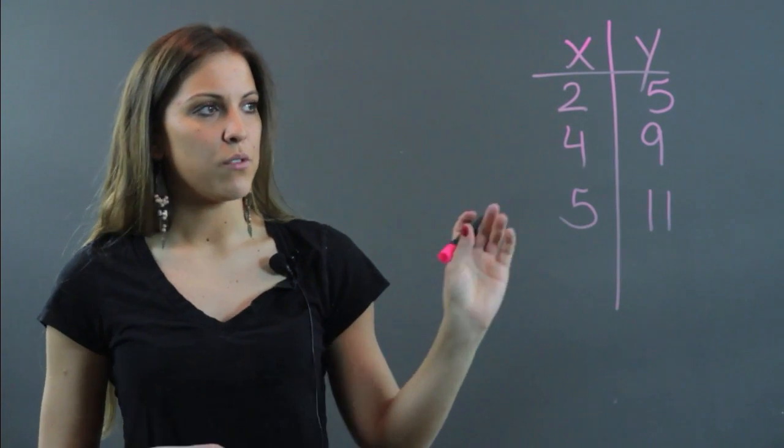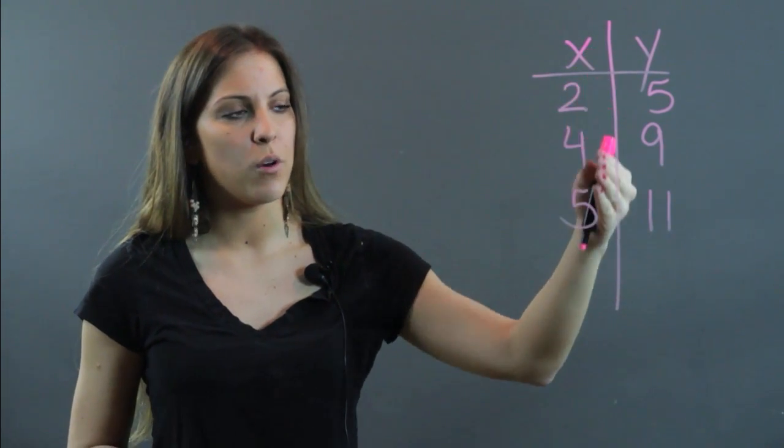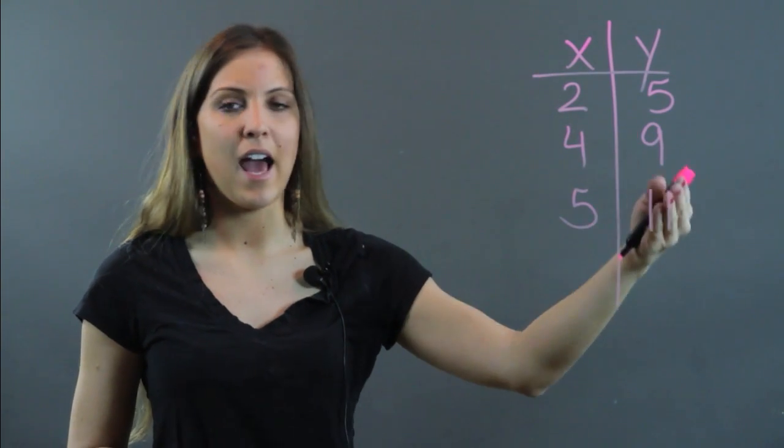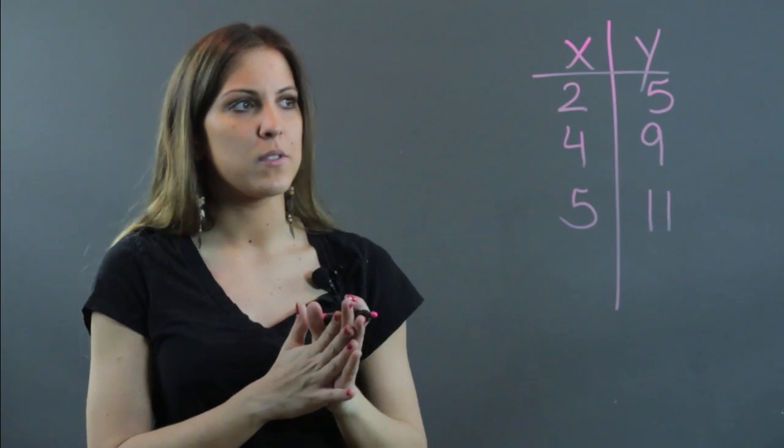You're told that there is a functional relationship between these values, and now you have to find it. What's going to happen is you normally have to multiply x by something and then add or subtract another value in order to end up with your y's. This is kind of like a numbers game.